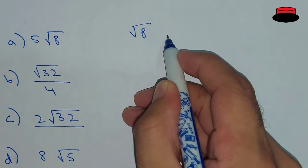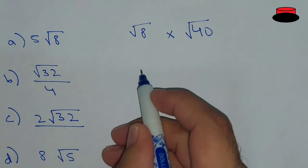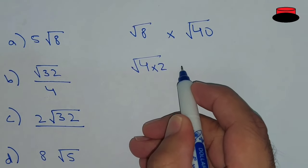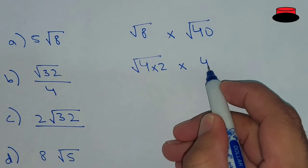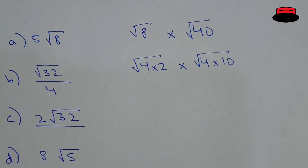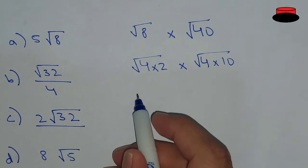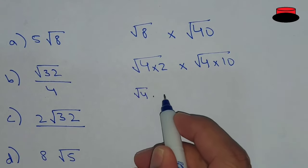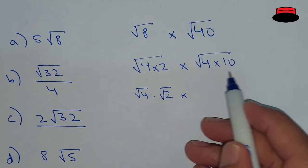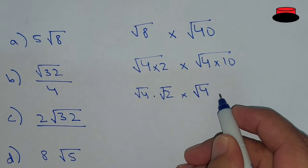So, under root 8 multiply by under root 40. Under root 8 can be written as under root 4 into 2, and in the same way under root 40 can be written as under root 4 multiply by 10. Now, this can be written separately — we will separate these as under root 4 multiply by under root 2, and in the same way under root 4 multiply by under root 10.